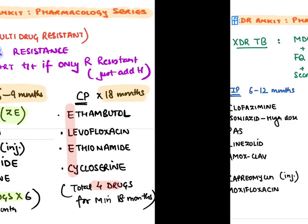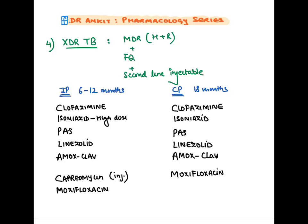XDR-TB is defined as MDR (H and R resistance) plus resistance to fluoroquinolone and aminoglycoside (injectable drug). For XDR-TB treatment: intensive phase for 6 to 12 months — mnemonic CIPLA-CM: clofazamine, isoniazid, PAS (para-aminosalicylic acid), linezolid, amoxicillin-clavulanate, capreomycin, and moxifloxacin — then continuation phase CIPLA-M for 18 months. A shorter MDR treatment is given for just 9 months, but only for pulmonary TB, after ruling out second-line drug resistance, and it is contraindicated in pregnancy.